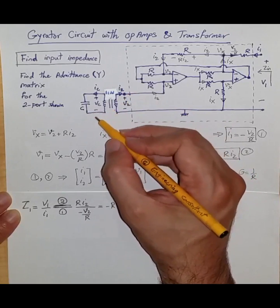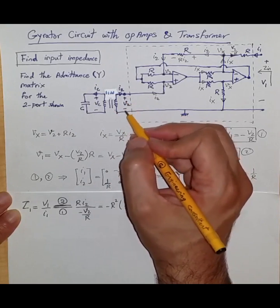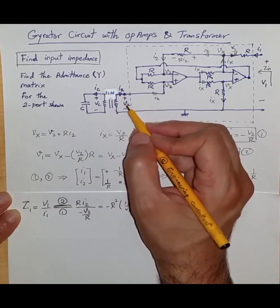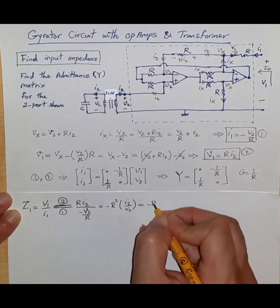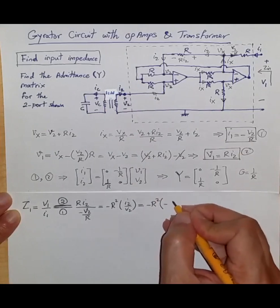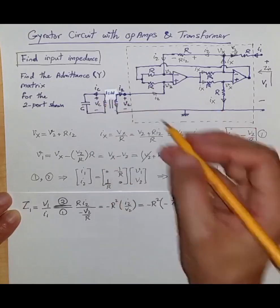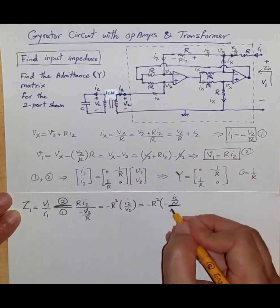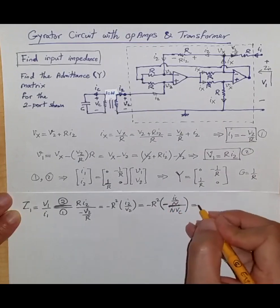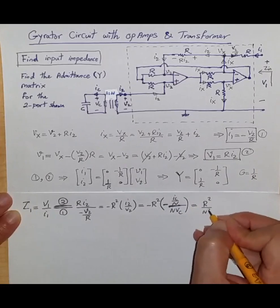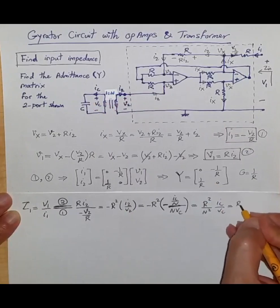Since there is only a passive device on the transformer primary — no active voltage or current source — the relationship between V2 and I2 must be consistent with a passive load. This means I2 = -IC/n as given by ideal transformer current relations, and V2 = n·VC. Note the negative sign carefully: the negative signs cancel, giving Z_in = R²/n² times IC/VC. Since IC/VC is the admittance of the capacitor, which in the s-domain is simply sC, we get Z_in = R²·sC/n².